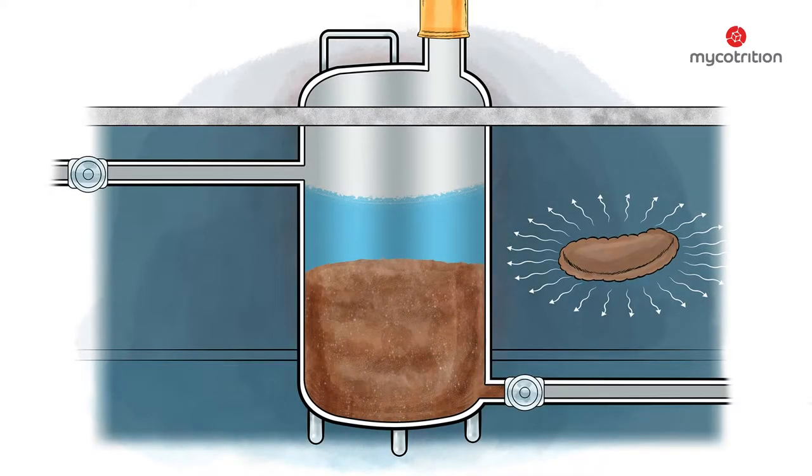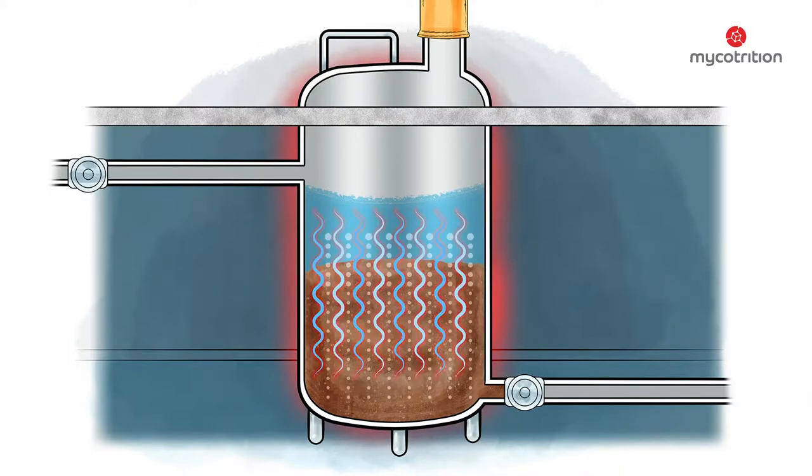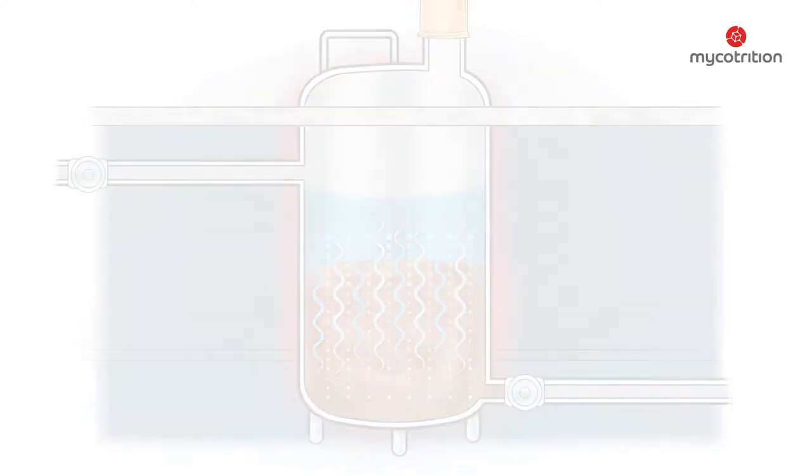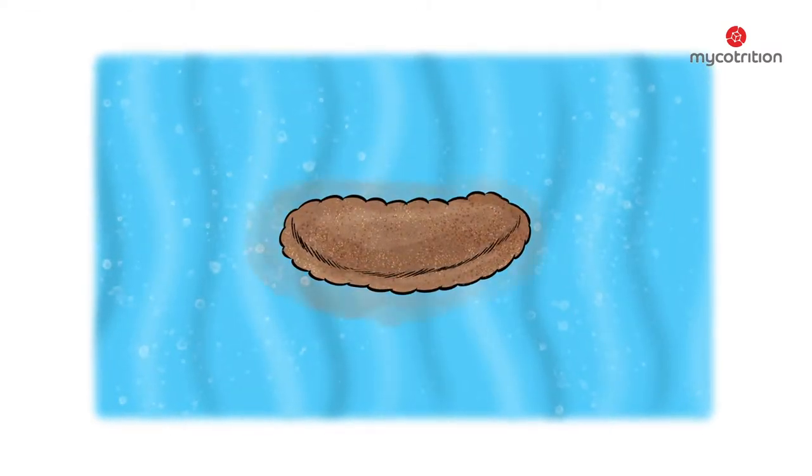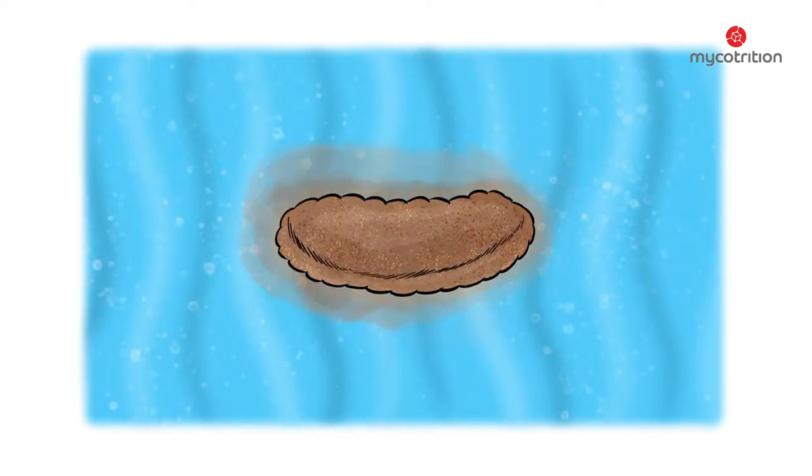The extraction tank is then gently heated to 90 degrees Celsius. The water begins to boil. The small mushroom grains swirl around in the water, releasing treasured ingredients. The release of their components turns the water brown. This can be compared to the infusion of tea.